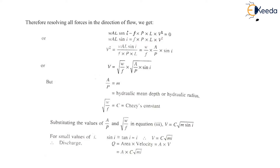Therefore V² equals w·A·L·sin(i) divided by F·P·L. On solving this we get V equals the square root of (w/F) into the square root of (A/P)·sin(i). Where A/P equals M, that is hydraulic mean depth or hydraulic radius, and the square root of (w/F) equals C, that is Chezy's constant. Substituting these values, V equals C·√(M·sin(i)).